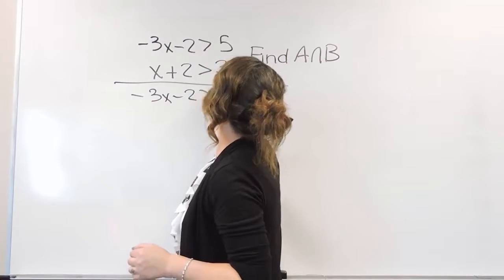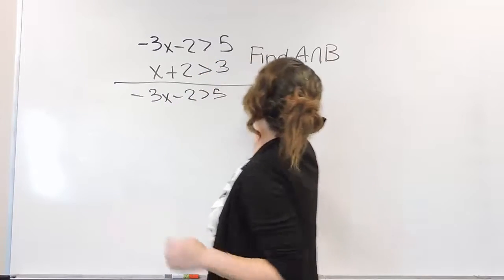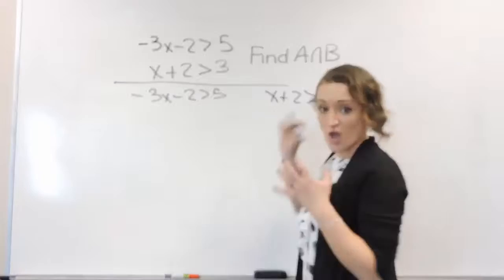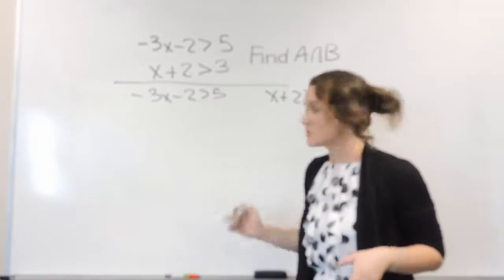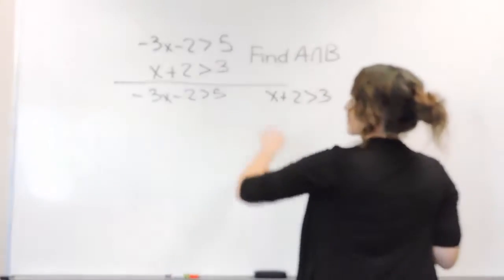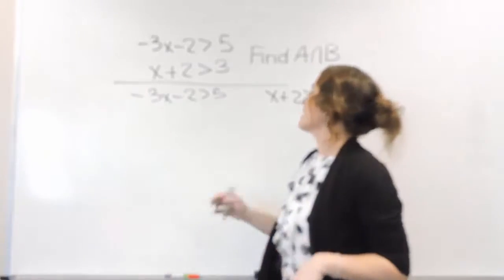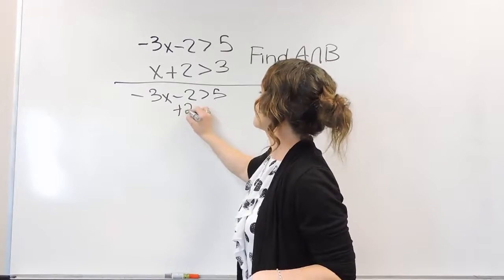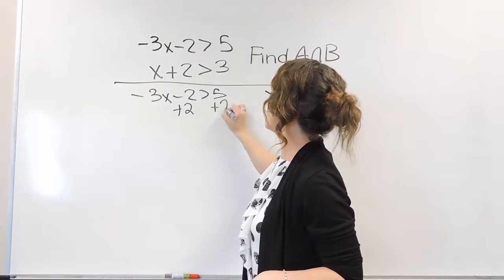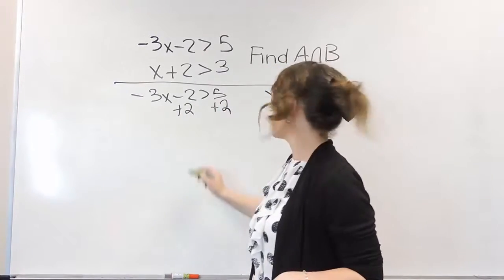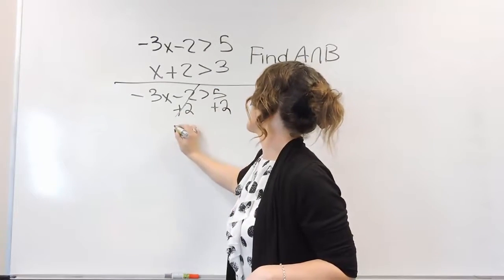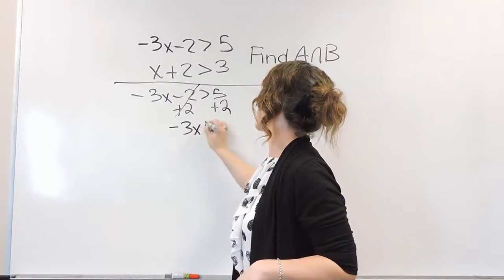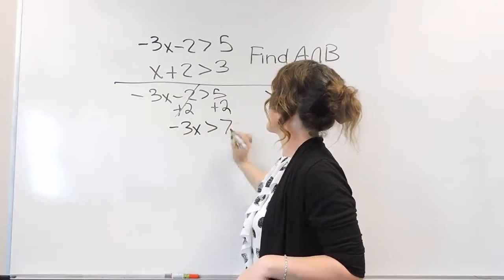I'm going to separate my equations so I can solve them each individually. Starting with the one on the left — if I'm solving this one for x, that means we're adding 2 to both sides. That's going to cancel on the left and we have negative 3x is greater than 7.